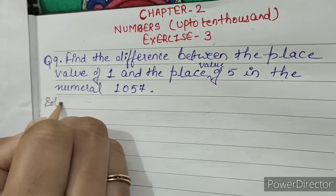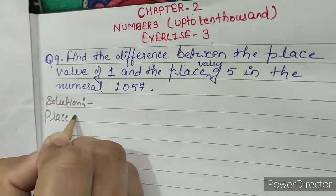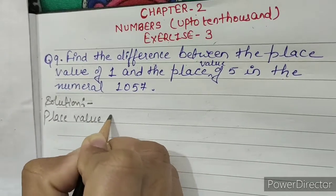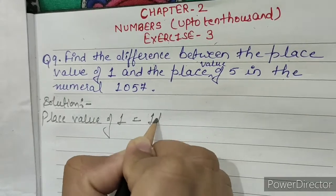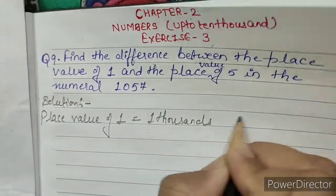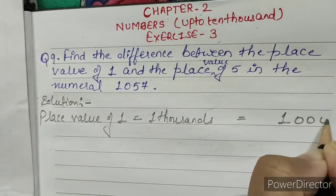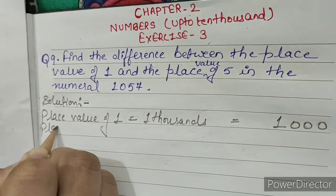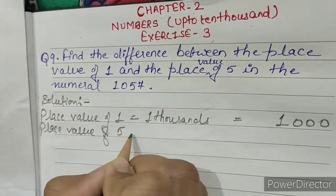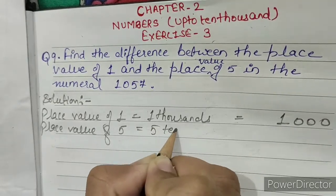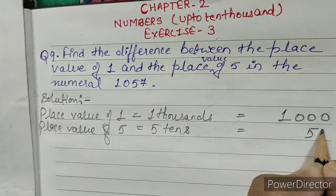Solution. Place value of 1 equals 1,000. Place value of 5 equals 5 tens, which means 50.